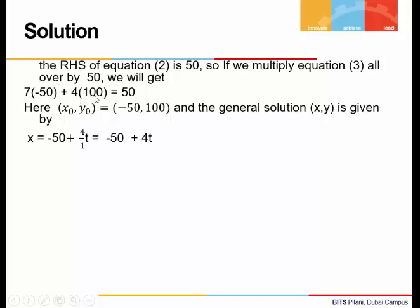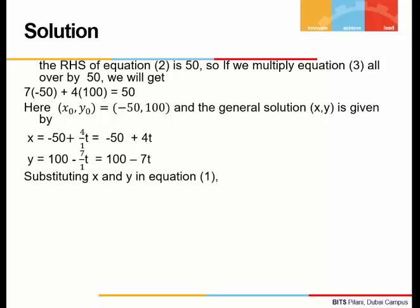Here we have the solution x0, y0. x0 is minus 50, y0 is 100, and when we write the general solution, it will be x is equal to minus 50 plus 4 divided by GCD of 7 and 4 into t. This gives us x is minus 50 plus 4t, and y comes out to be 100, which is y0 minus 7 divided by the GCD into t—that is, 100 minus 7t.